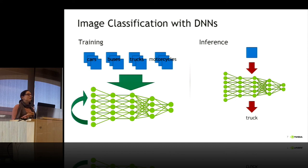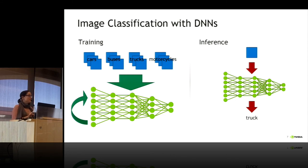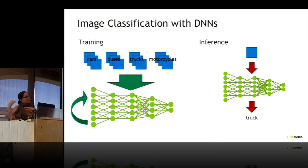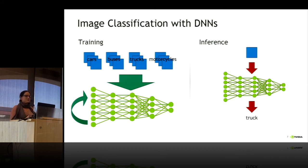Then I will see a new image in the street, for example, and I will run inference. Inference is basically the prediction: I take that image, push it through the network, and hope for an answer. For example, if I see a truck, I'll get "truck".